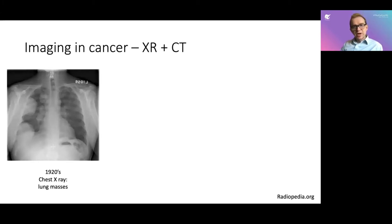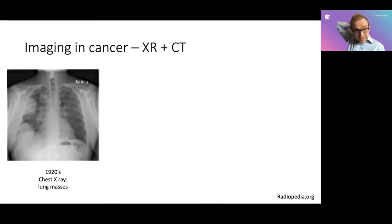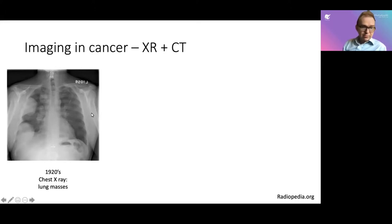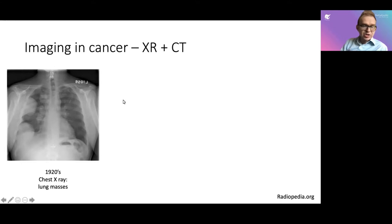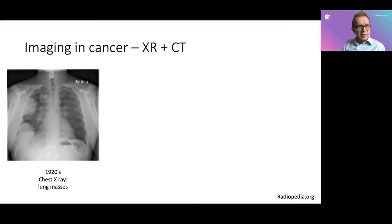Let's start out looking at some basics: X-ray and CT. Essentially, you have an X-ray tube that fires a beam through a patient, and it gets stopped by areas of density. Areas that are less dense, like the lungs, look dark; areas that are more dense, like the bones, look white. Here's an example of a chest X-ray with lung masses — probably lung metastases. Chest X-rays are inexpensive and fast, but they're very limited for oncology imaging and not used much for standard cancer follow-up.